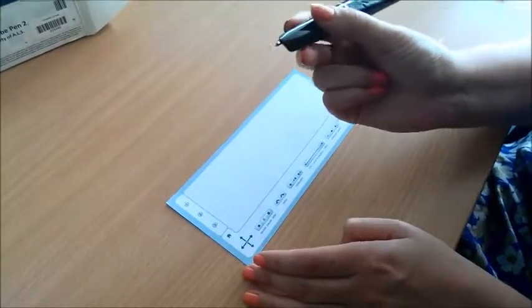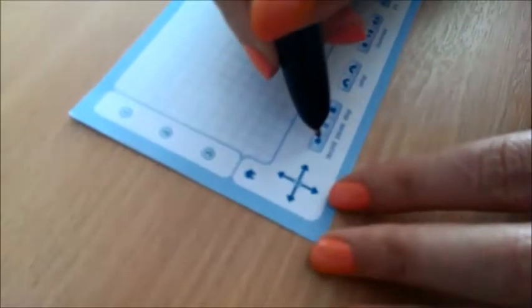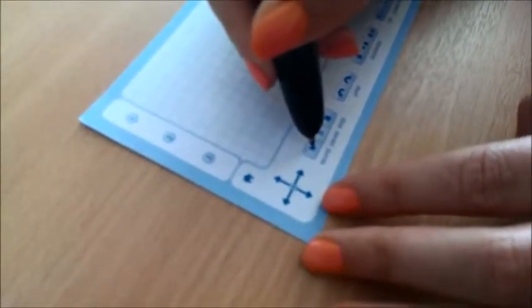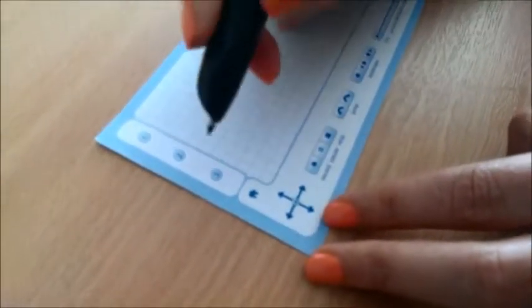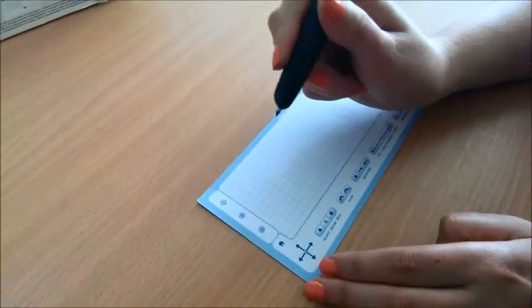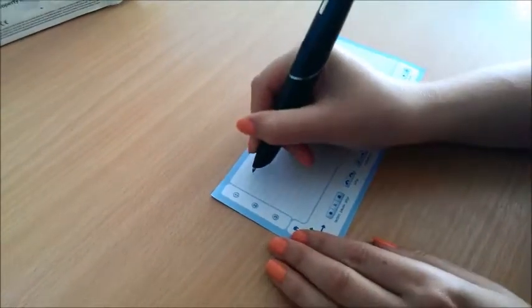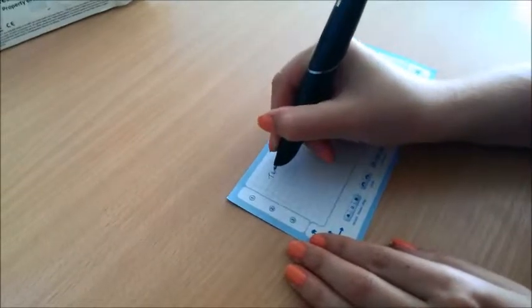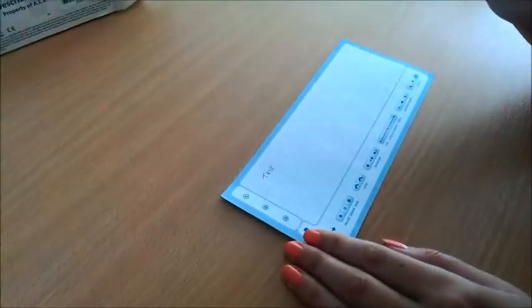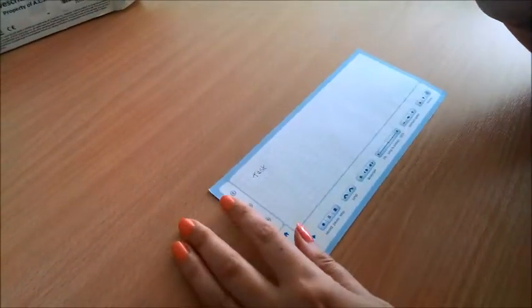To record notes, press the nib of the pen on the record button on the pad. When you press down, the pen will make a bleeping noise. You can then write shorthand notes and verbally record the notes to add more detail.